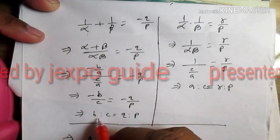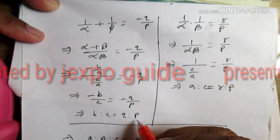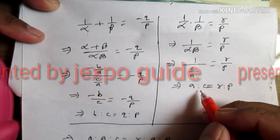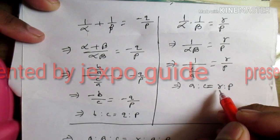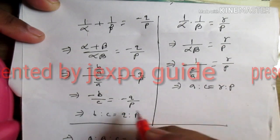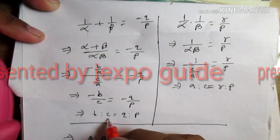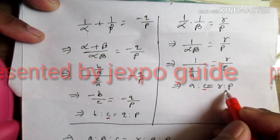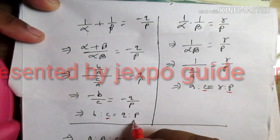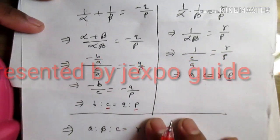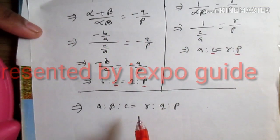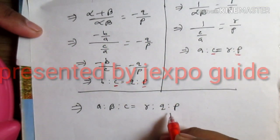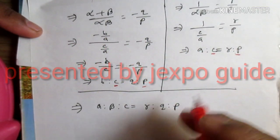Solving these relations, we get c is equal to r and p is equal to q, meaning R is to Q as P. The answer is option C.